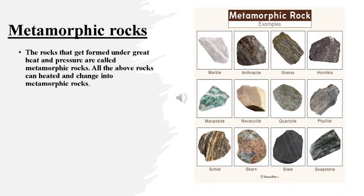Class, pay attention. The last type of rock is metamorphic rocks. These are rocks that get formed under great heat and pressure. When igneous rocks and sedimentary rocks come under heat and pressure, they change into metamorphic rocks. For example, clay changes into shale, and limestone changes into marble. And you know where we use marble — yes, we use marble in halls.